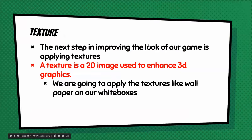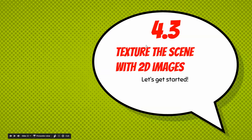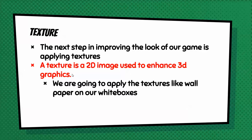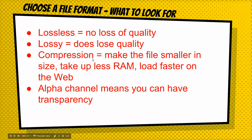Make sure you write that down in your notes so I know where you're at — makes it easier. Take these notes. The next step in improving the look of our game is to apply textures. A texture is a 2D image used to enhance 3D graphics. We're going to apply textures like wallpaper on our white boxes.